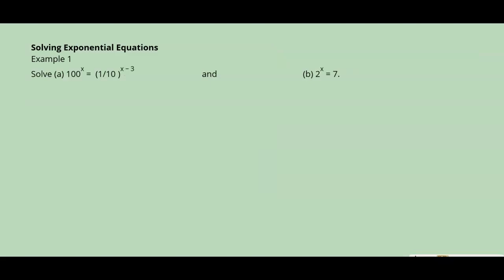Example 1: Solving exponential equations. We just talked about the properties of equality — basically, if you have the same base, you can set the exponents equal and solve. That's easy if the base is automatically the same. If not, you may have to rewrite it a little bit to make the base the same.